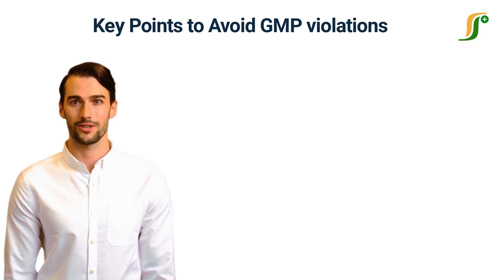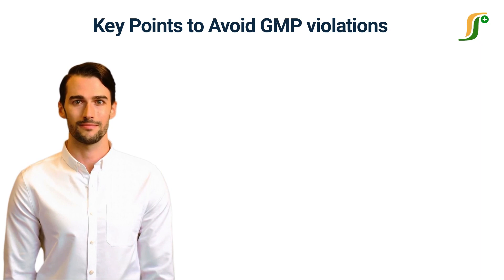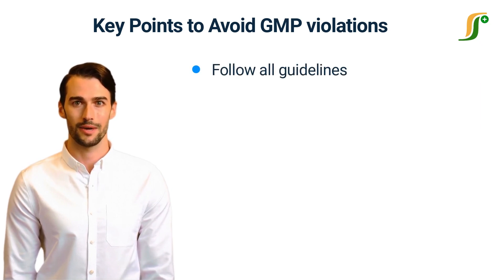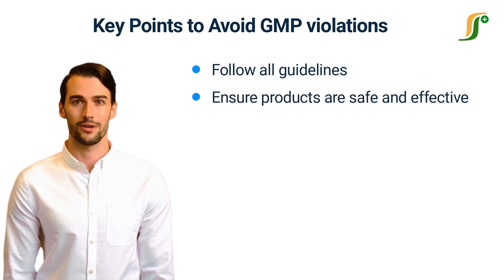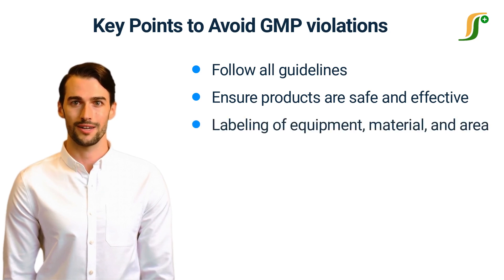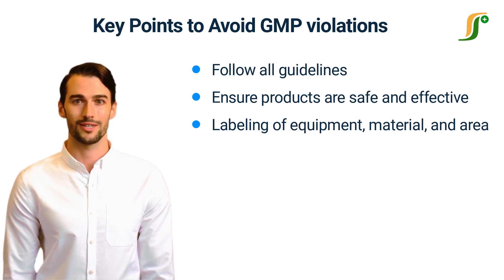GMP violations can be avoided if you keep some key points in mind. Follow all guidelines provided by regulatory bodies and make sure all processes are in line with GMP requirements. Ensure products are safe and effective, and keep records of procedures and activities to ensure compliance is maintained. Labels are a primary tool for identifying GMP; label requirements include equipment, material, and area, and labels must contain all necessary GMP information to ensure compliance.